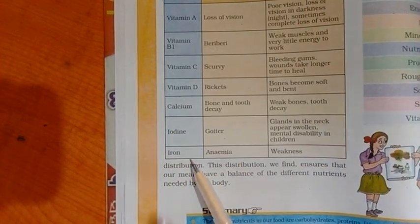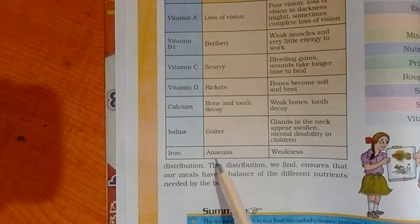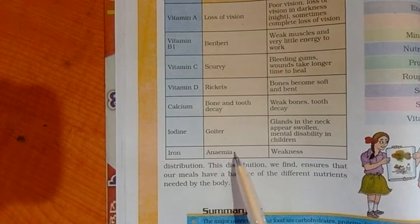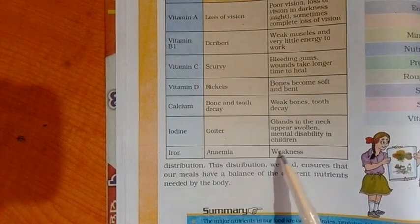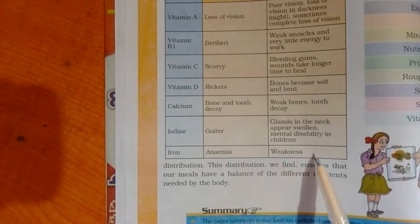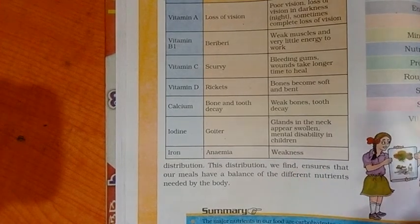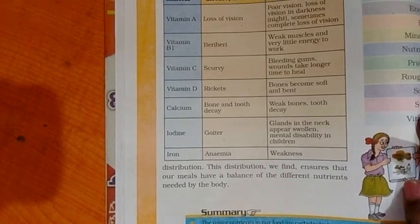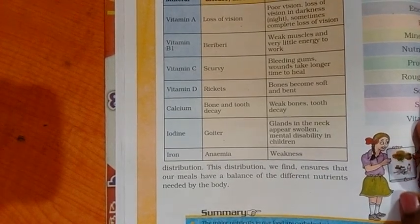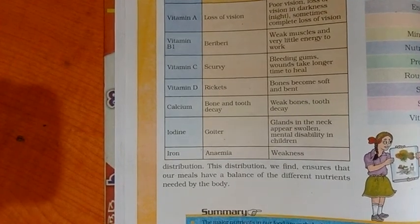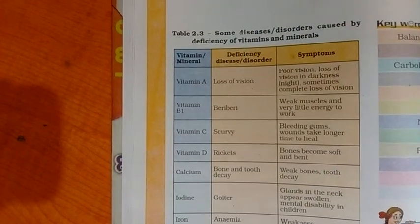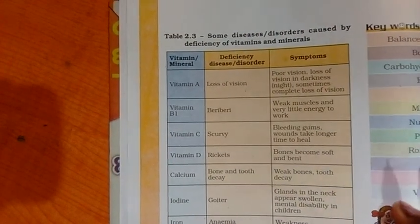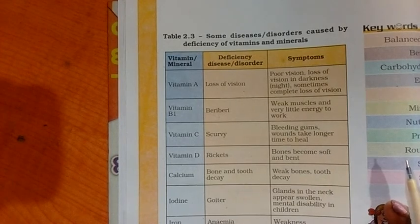Iodine deficiency also causes anemia, with symptoms including weakness and low hemoglobin. These are all the topics covered in this chapter on components of food for class 6 students. Thank you, friends.